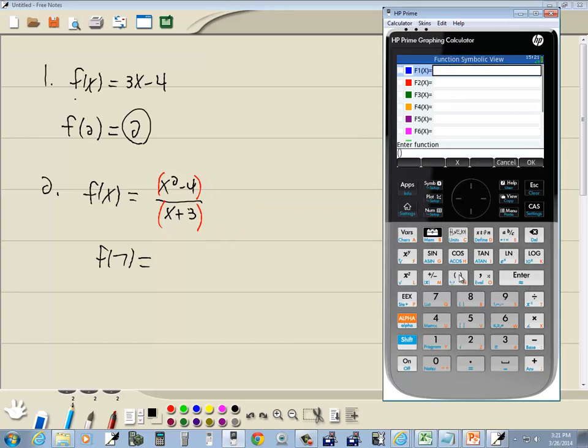I'll push my parentheses button and it puts on both sets there. Then we'll do x squared, so x key, the x squared minus 4.